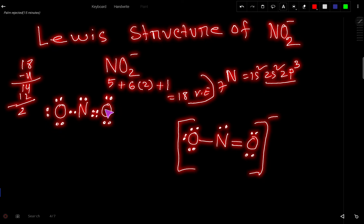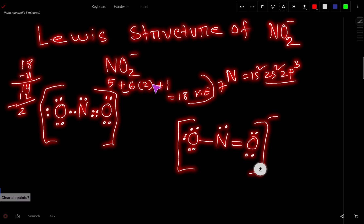Here oxygen has 8, nitrogen has 8, and this oxygen also has 8. For the negative charge, we have to use a bracket and place the negative charge.